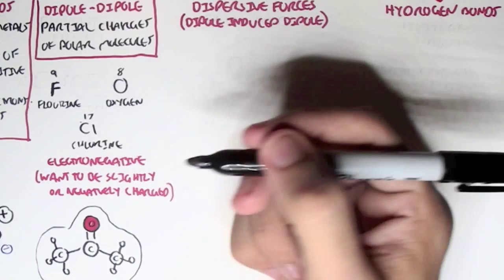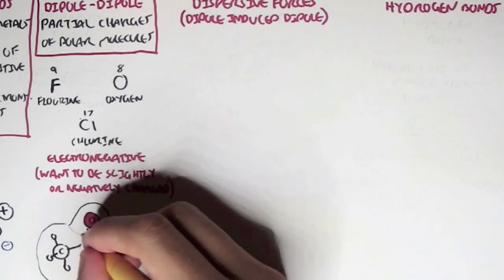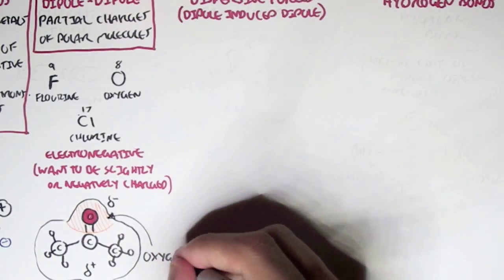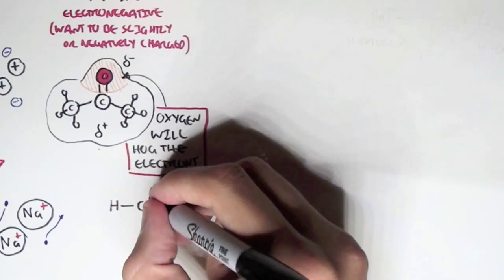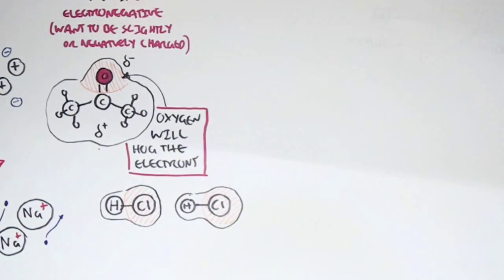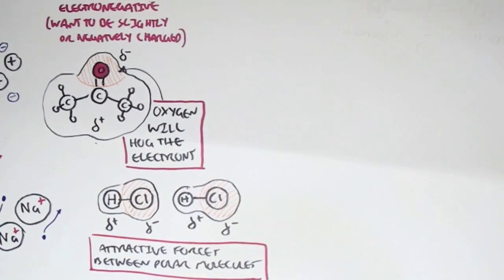Because oxygen is highly electronegative, even in a covalent bond with carbon it hogs most of the electrons, creating a partial negative charge on the oxygen end and a partial positive charge on the opposite end. Similarly, in hydrogen chloride (HCl), chloride has a partial negative charge and hydrogen has a partial positive charge. These partial charges create attractive forces between polar molecules.